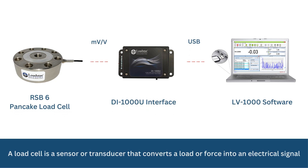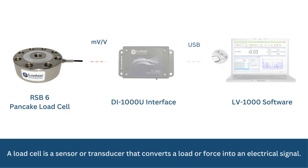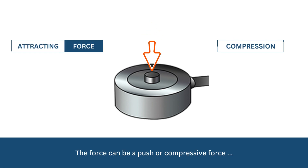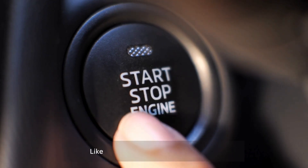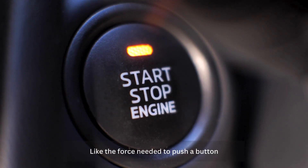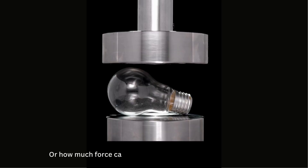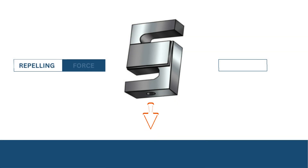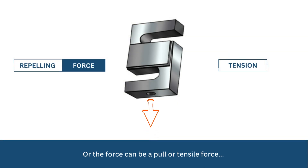A load cell is a sensor or transducer that converts a load or force into an electronic signal. The force can be a push or compressive force, or the force can be a pull or tensile force.